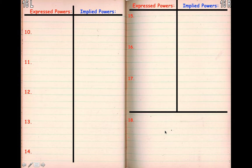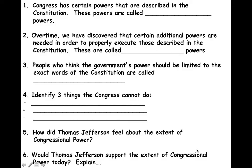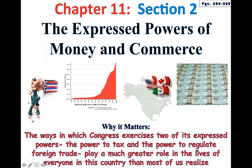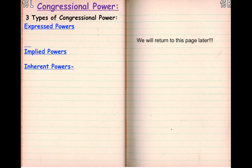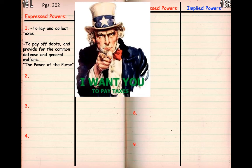You are going to want to write or leave a little space for this because this feeds into that one. You'll see what I mean. So our first expressed power is to lay and collect taxes.